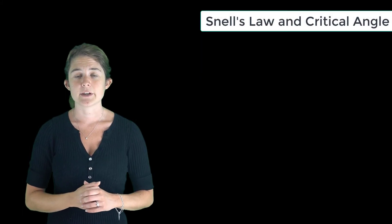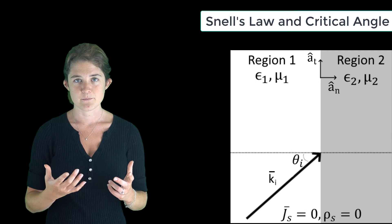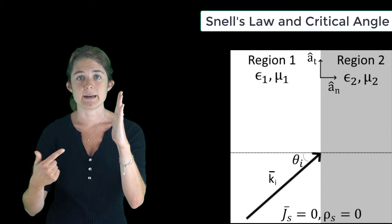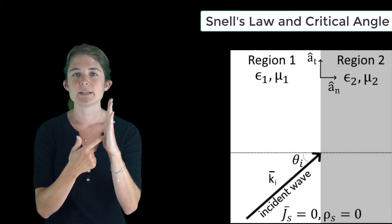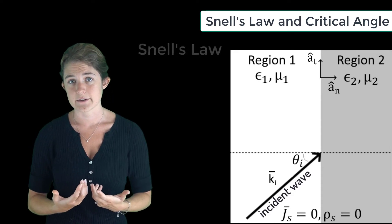The second and third cases we will look at involve oblique incidents where the incident wave hits the boundary at an angle theta I from the normal to the surface. For these cases, we will need to recall Snell's law.